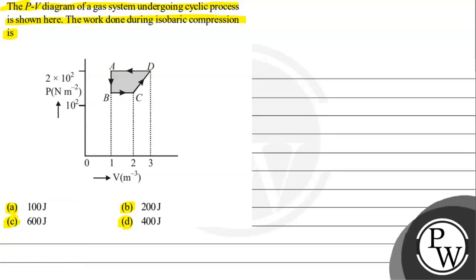So first we need to understand that as a key concept. Isobaric means that we have pressure is constant, and secondly, compression means volume is decreasing. Okay, so here are two important things that we know.